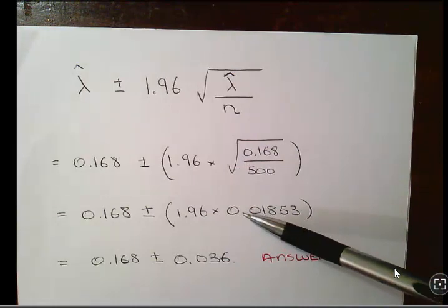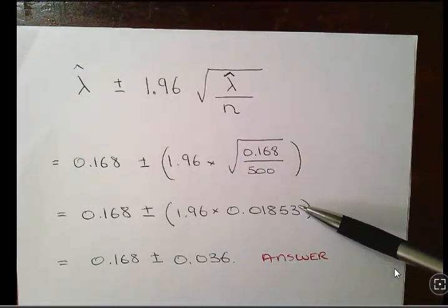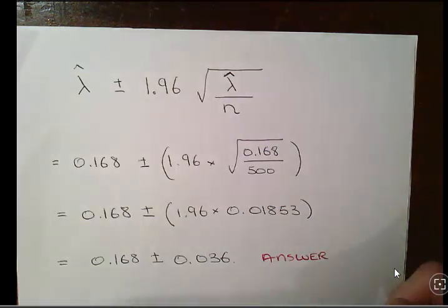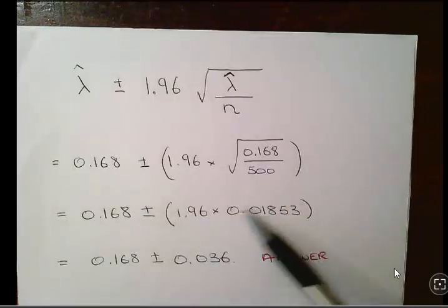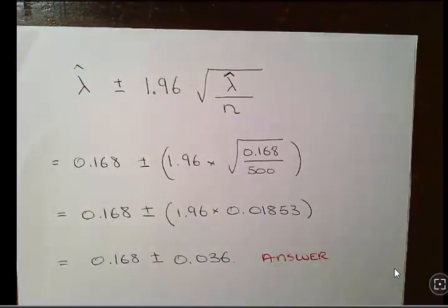Working it out in the calculator, 0.01853, a few decimal places would suffice here. And then just to tidy it up, 0.168 plus or minus 0.036. When you just multiply that out, you get the margin of error, and you can report it as follows.